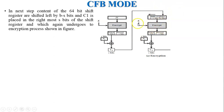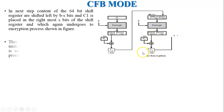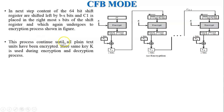This updated shift register is applied to the encryption process. The second input is key K, and it generates the next 64 bits. From this 64-bit output, s bits are selected, and plain text P2 — with size s bits — is XORed with the selected s bits to generate C2. The process continues until all plain text units have been encrypted.